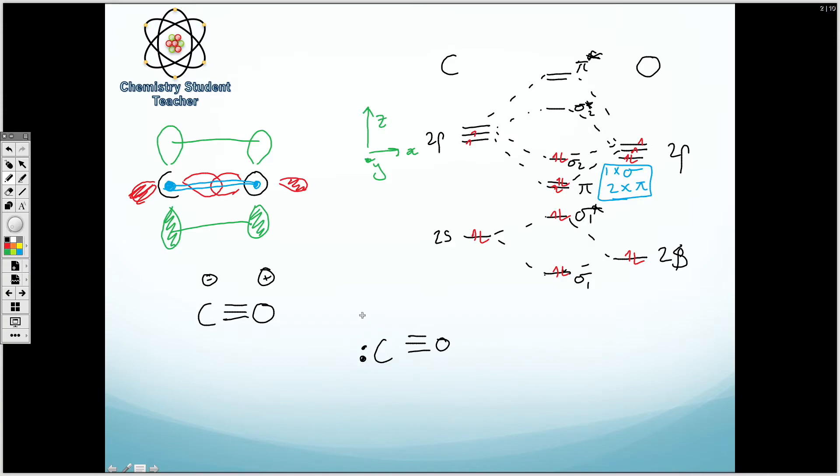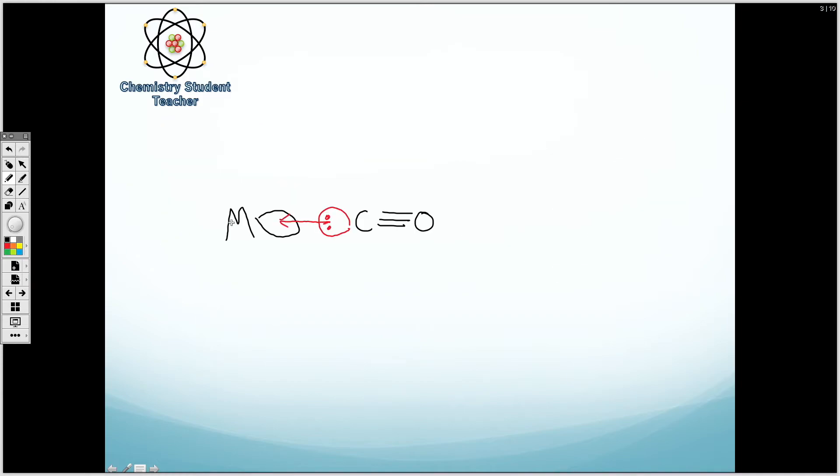This is as important as I then go on to the next thing. So we're going to look at the metal to carbonyl bonding. So first of all, we've got this lone pair on the carbonyl ligand. We can have an empty orbital on the metal.